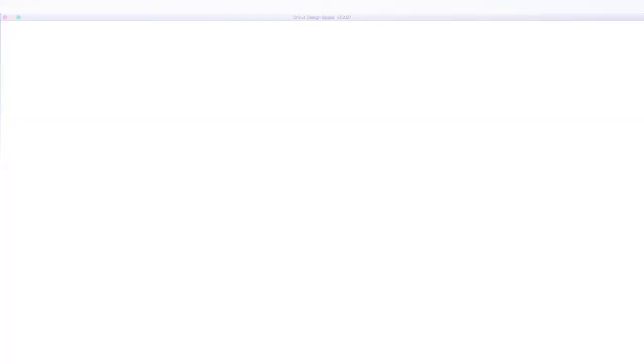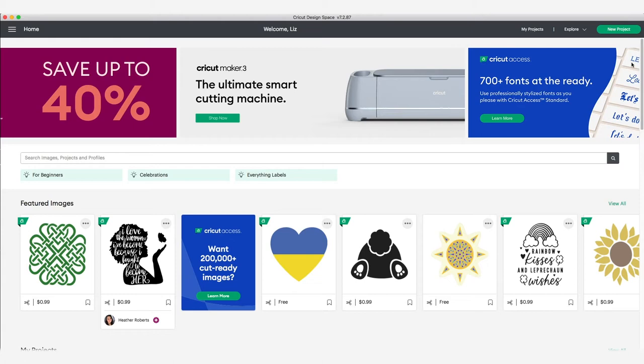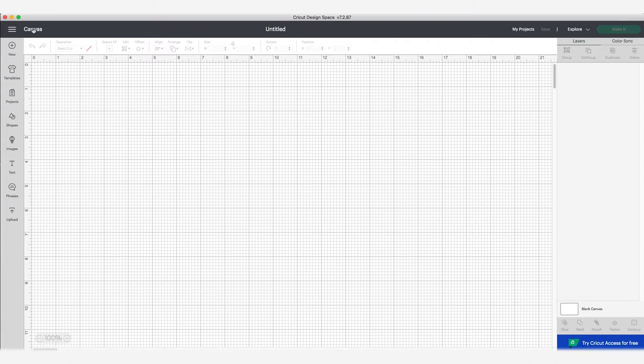From here, you can either use Cricut's fonts and graphics or upload your own designs. We made ours in Photoshop, so we're going to click upload images. Once your designs are uploaded, select them and hit add to canvas.